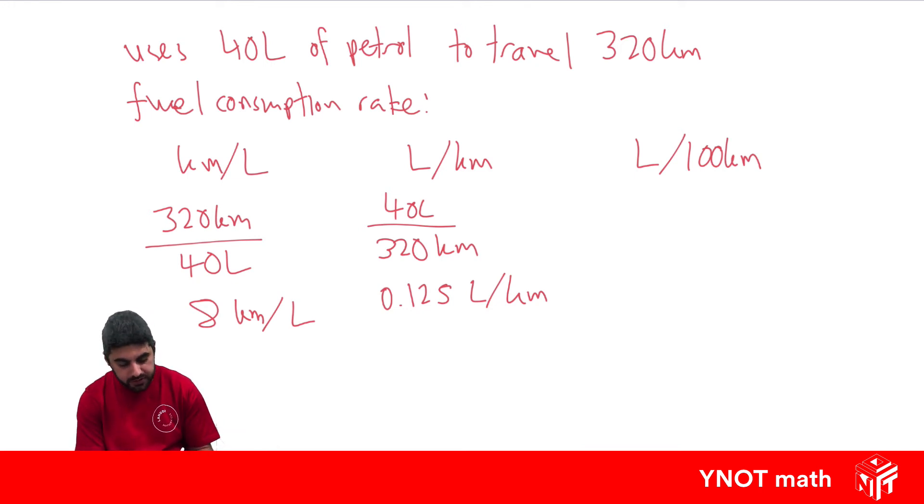Now litres per 100 kilometres is very similar. It's 40 litres per 100 kilometres. If we're travelling 320 kilometres, how many hundreds go into there? Divide that number by 100 to figure it out. We end up with 40 litres divided by 3.2, which gives us 12.5 litres for every 100 kilometres.